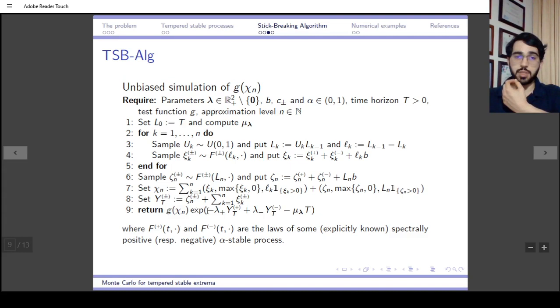This is G of χ_N, and we're only left with a change of measure, which is this martingale here. As I said before, this is the μ_λ that I presented in the previous slide.